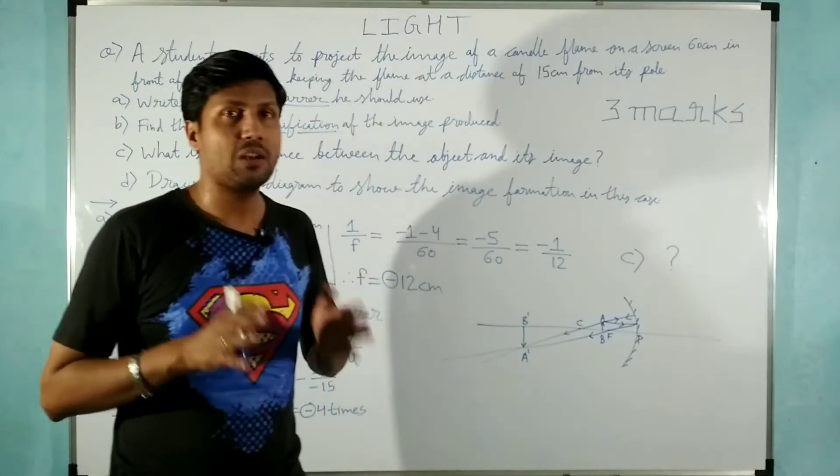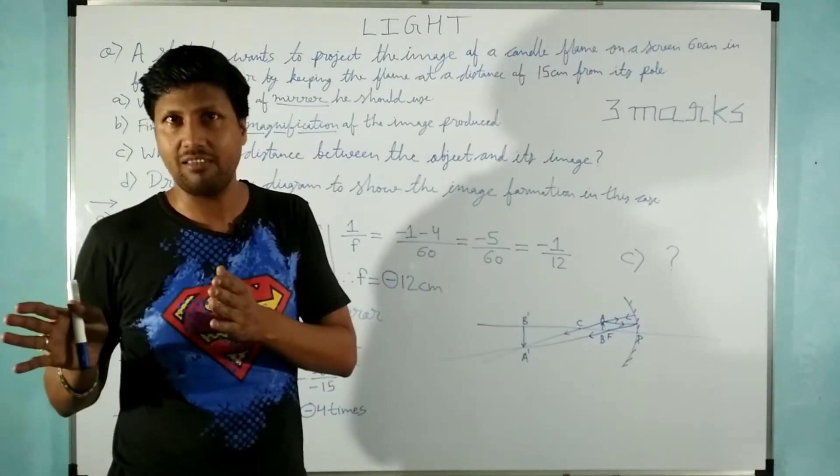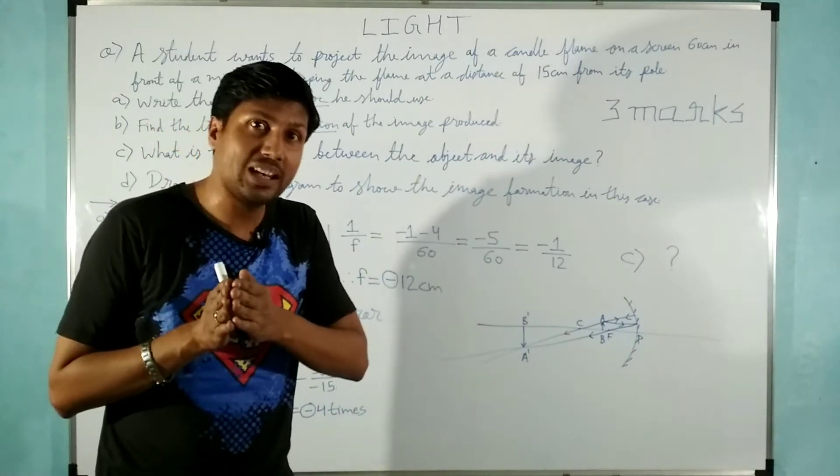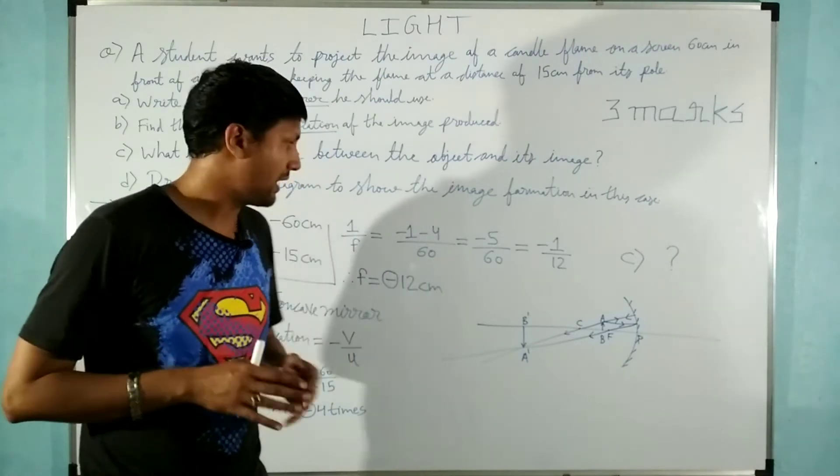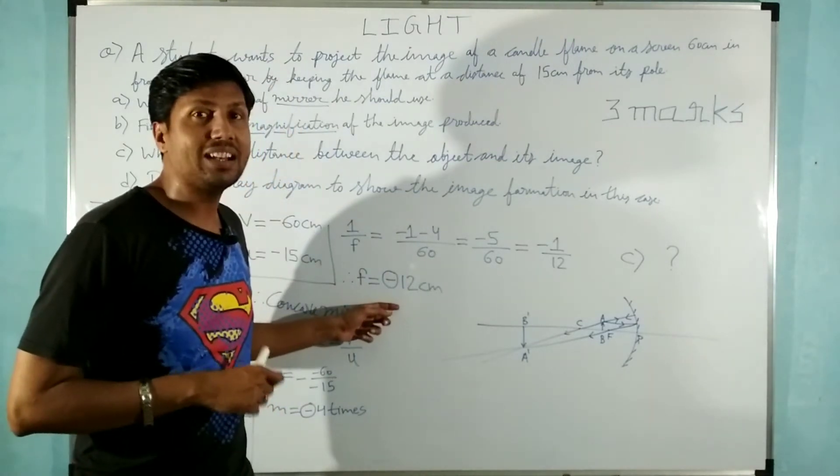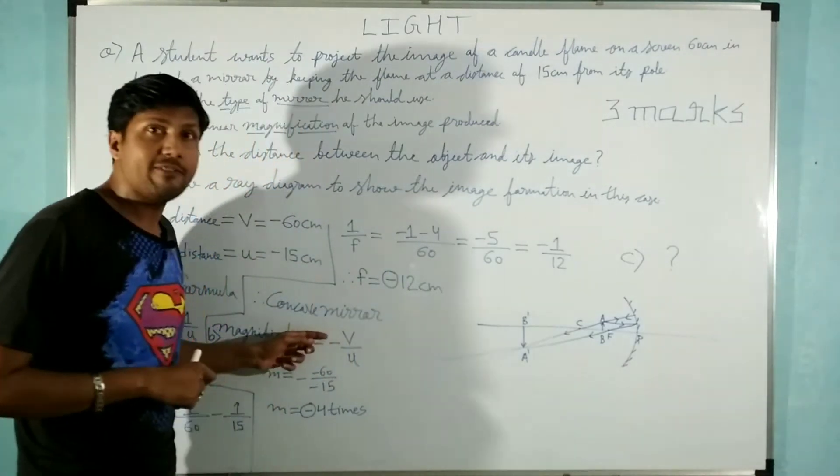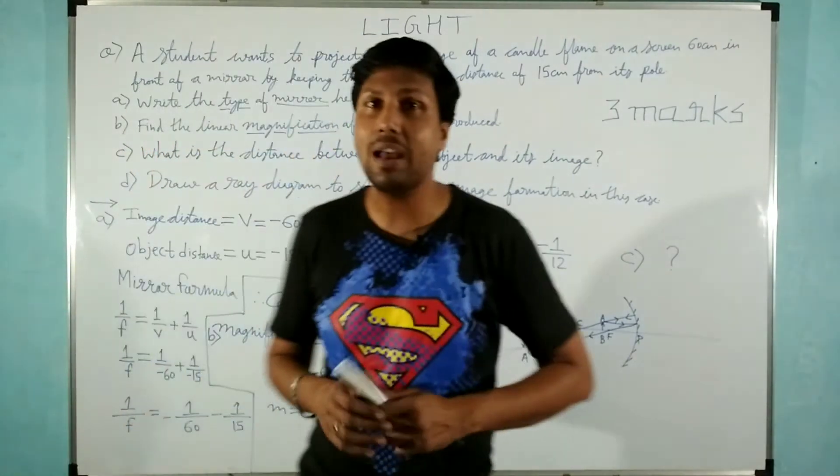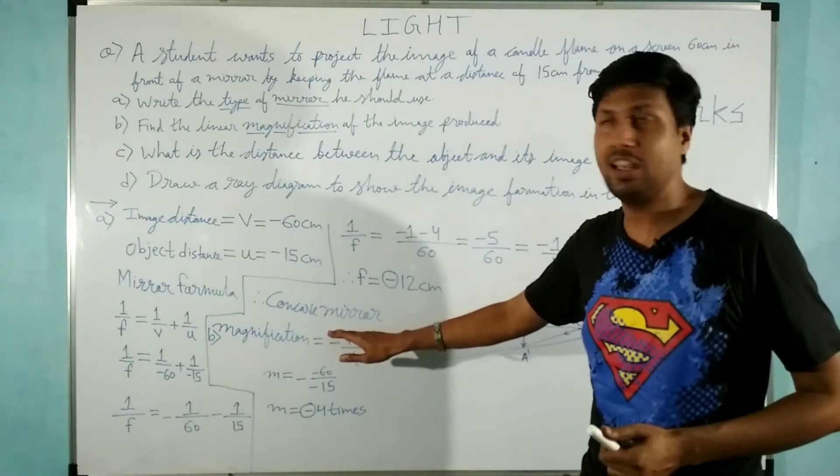It indicates that the mirror is a concave mirror. Why? Because its focal length is in negative only. Whereas convex mirror's focal length is in positive. So this minus sign shows that it is a concave mirror.